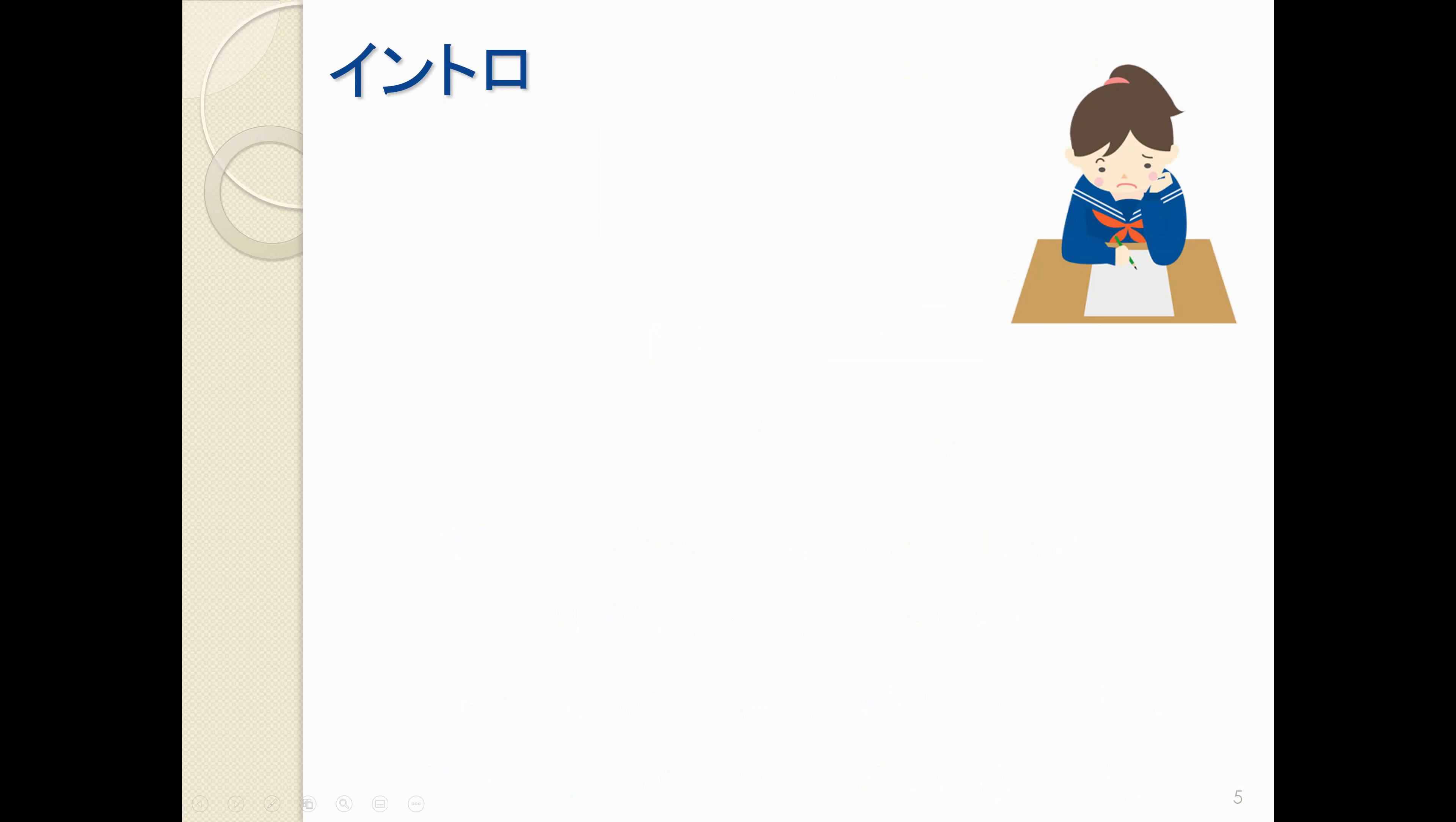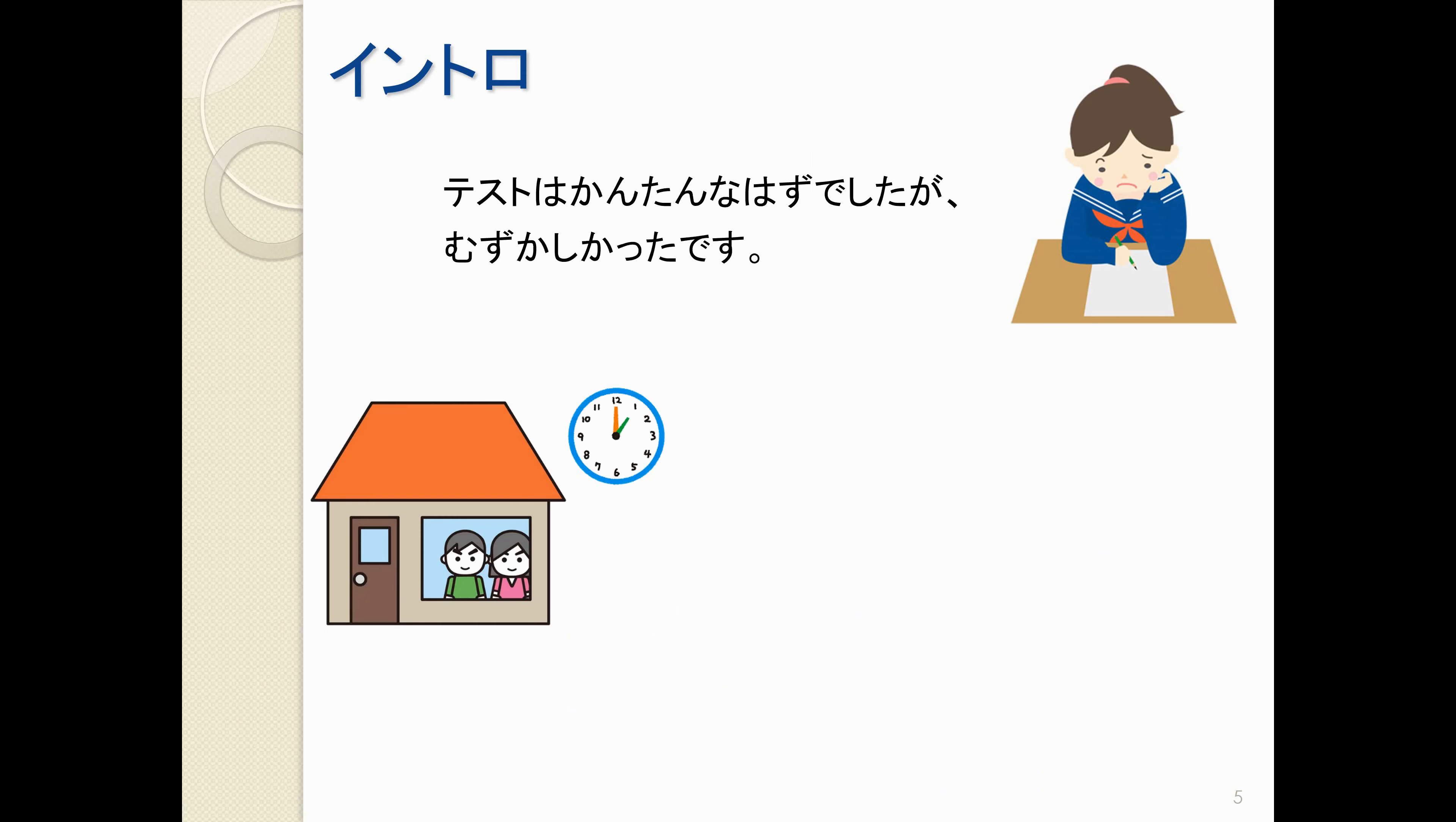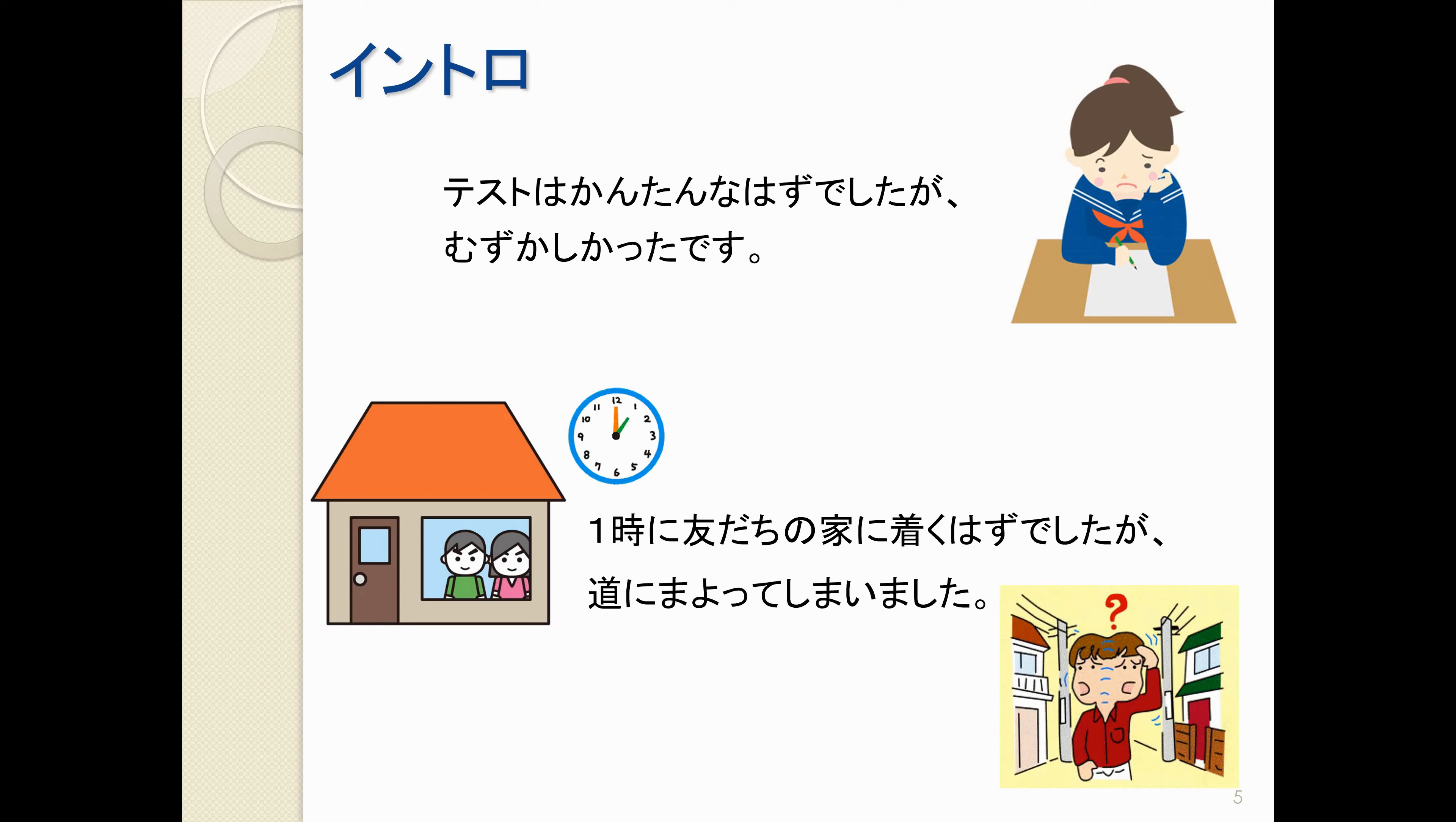Let's take a look a little bit more at this はず. テスト は簡単 なはずでしたが、むずかしかったです。 いちじに ともだちの家に つくはずでしたが、みちに まよってしまいました。